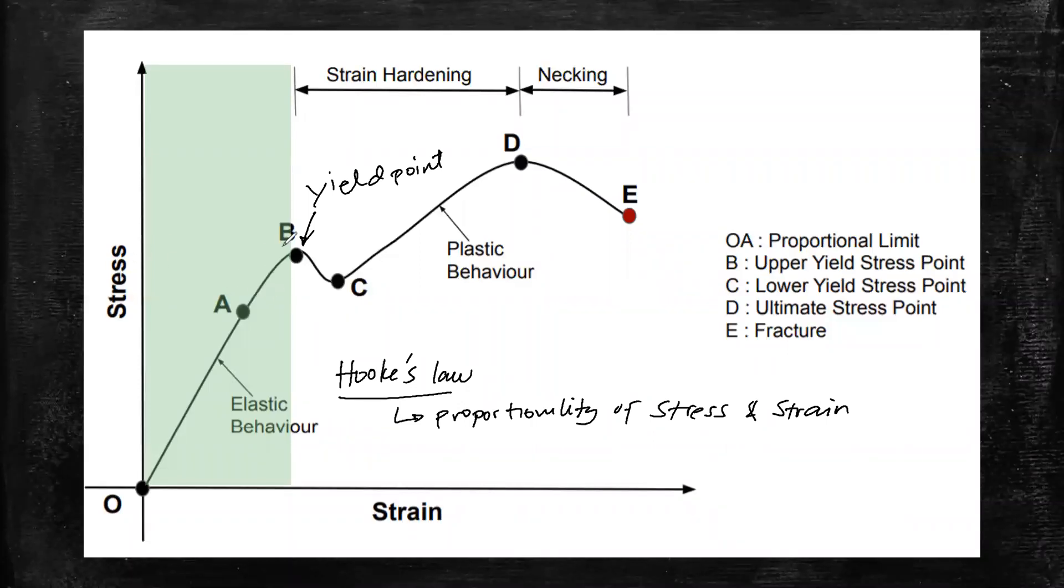In terms of stress, the stress being applied at this point B is what we call elastic limit. Within this region from point O to point B, the material shows an elastic behavior, which means after applying or removing the force, it returns to its original shape.